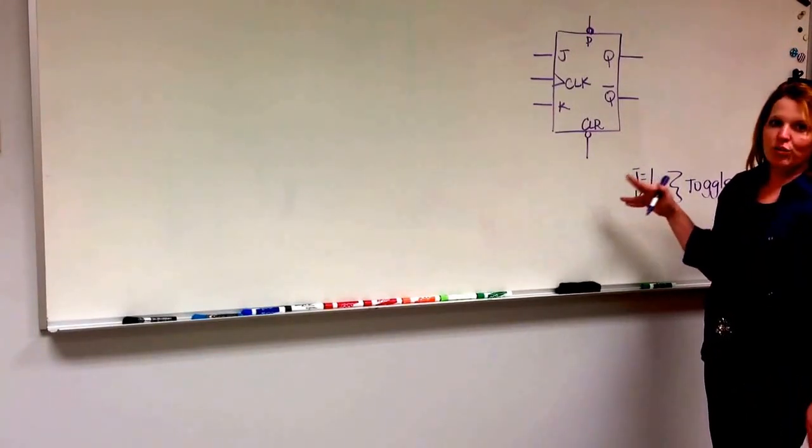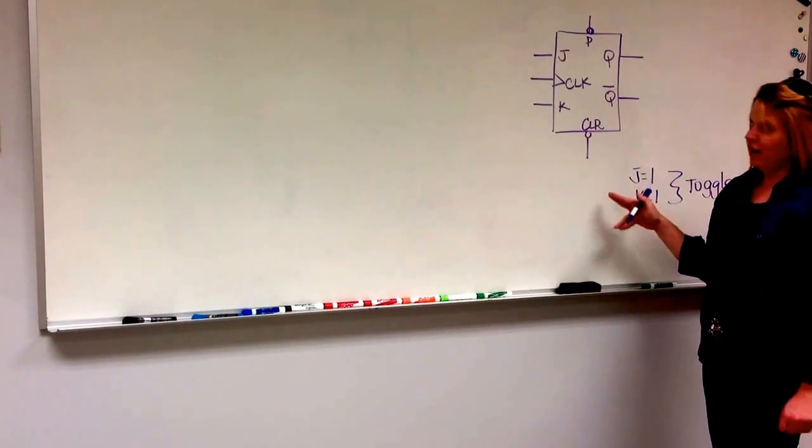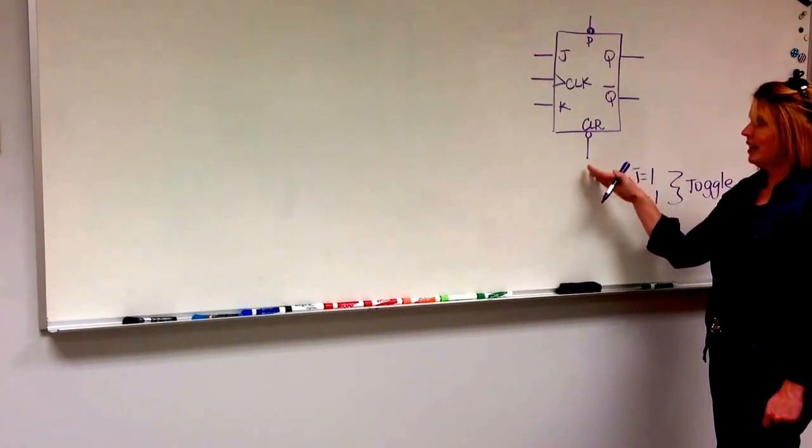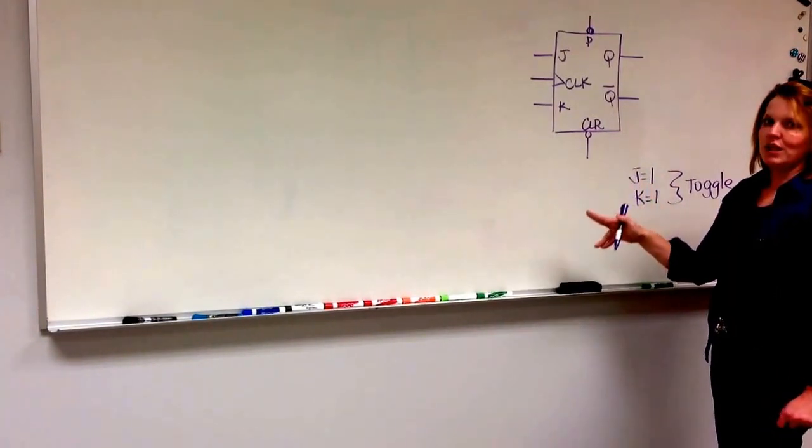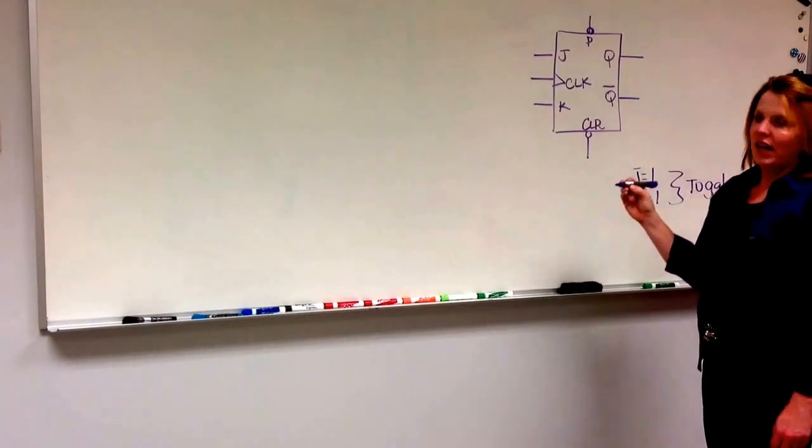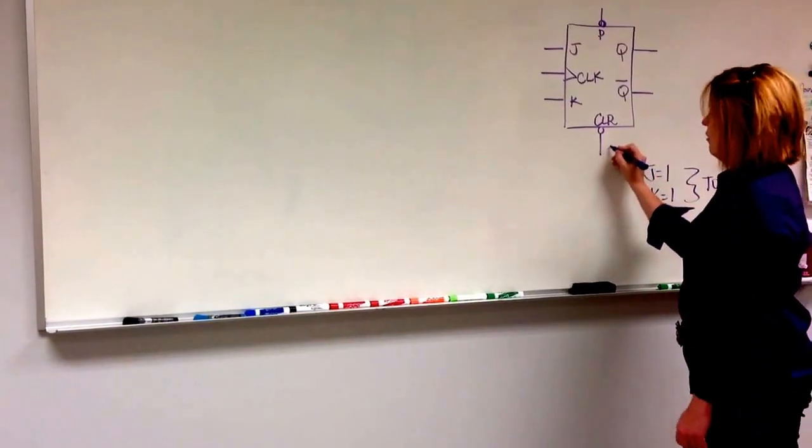We don't want to use the preset and clear right now. So to do that, what I would like to do is just tie them out or turn them off, and so to do that I would connect them to 5 volts.